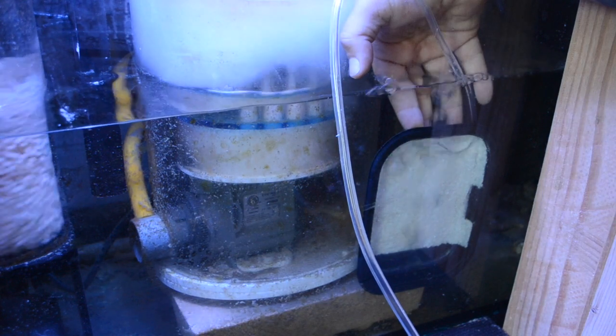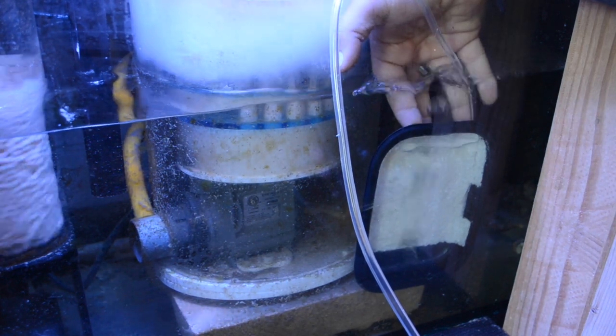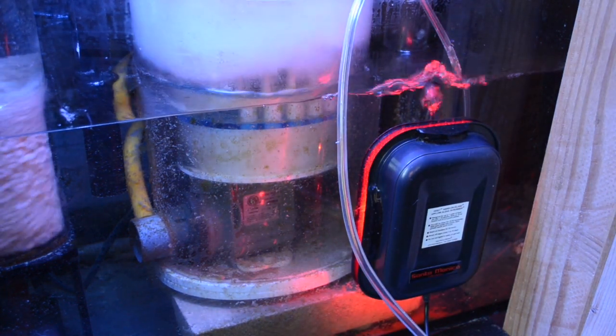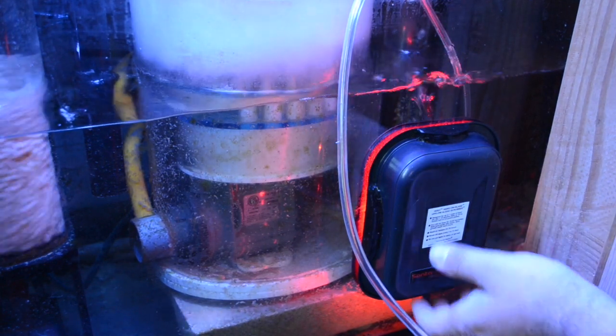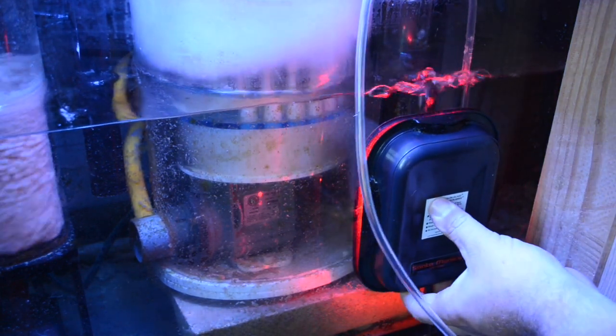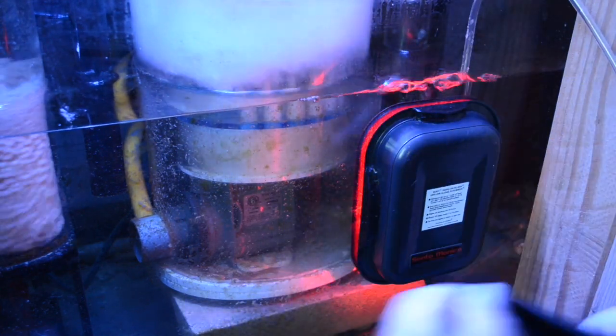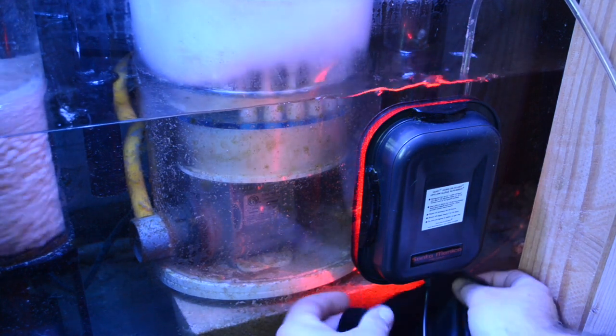That looks to be like a good amount of flow. I'm getting bubbles on both sides of the container. Now we'll plug in the lights. We're going to take our blackout cloth, place that over one of the LED lights until that algae starts to grow.